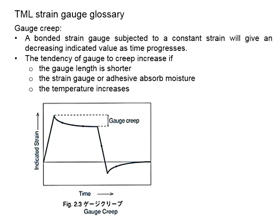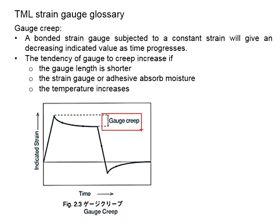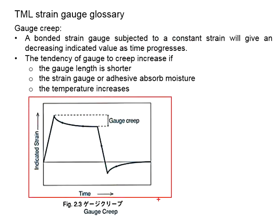Now let us proceed with the other terminologies related to strain gauge. We have gauge creep. When a strain gauge is bonded to a test specimen and it is subjected to a constant strain, gauge creep can happen. There will be a decreasing indicated value as the time progresses. This phenomenon is represented by the figure here.